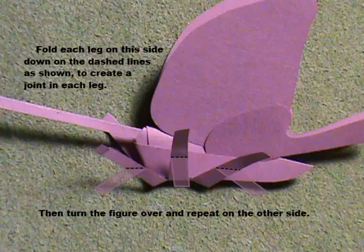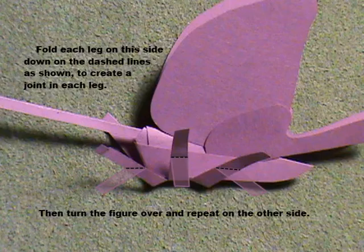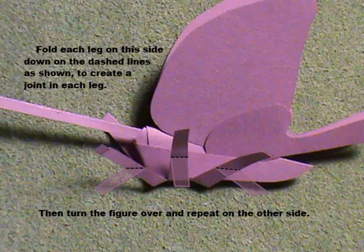Now fold each leg on this side down on the dashed lines as shown to create a joint in each leg. Then turn the figure over and repeat on the other side. We have six jointed legs.